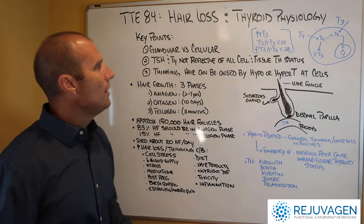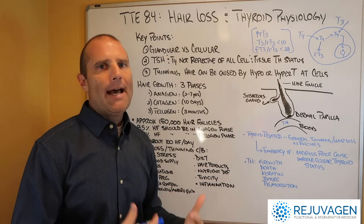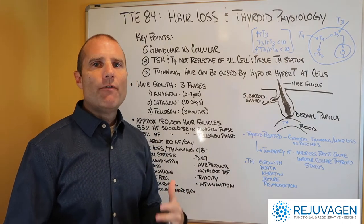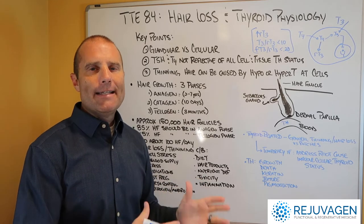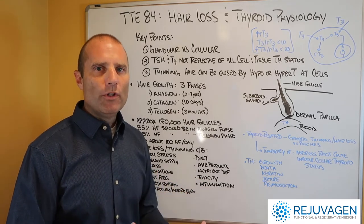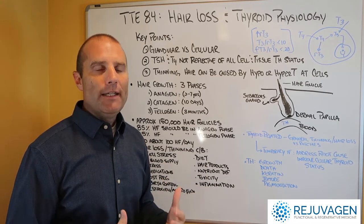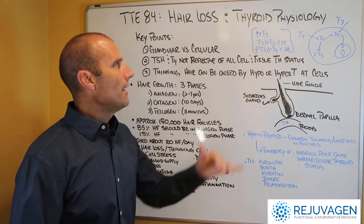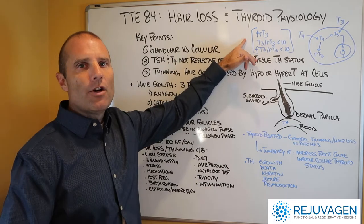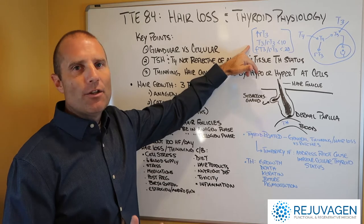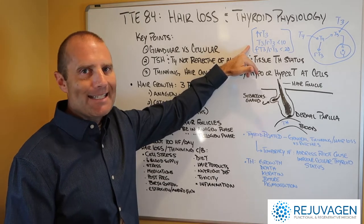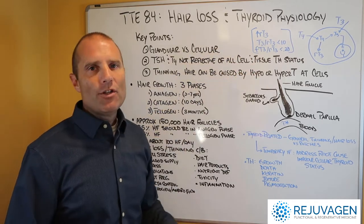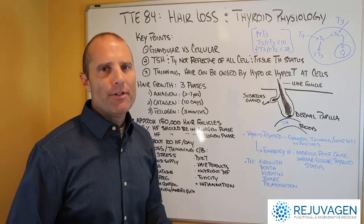TSH and T4 are not reflective of what's happening in all your cells at the same time. In the allopathic model that's the primary mechanism to evaluate thyroid physiology, but really what they're looking at is whether the gland is producing too much or too little. What we need to get to is what's happening at the cellular level. The best way to interpret that is to look at reverse T3 to see if you're causing increased deactivation of thyroid hormone. You can look at the T3 to reverse T3 ratio — if that's less than 10, or a free T3 to reverse T3 ratio less than 0.2, we typically see cellular hypothyroidism.